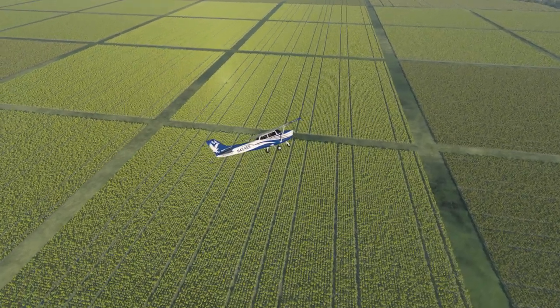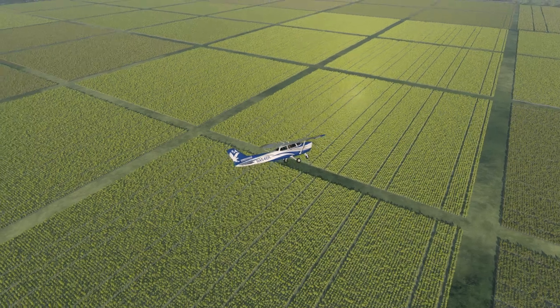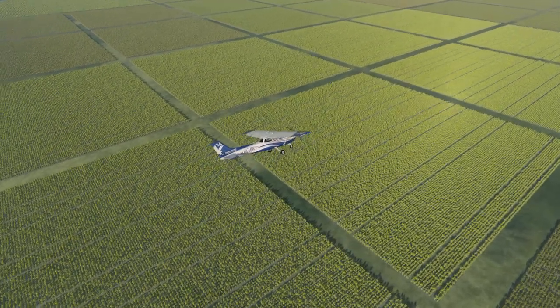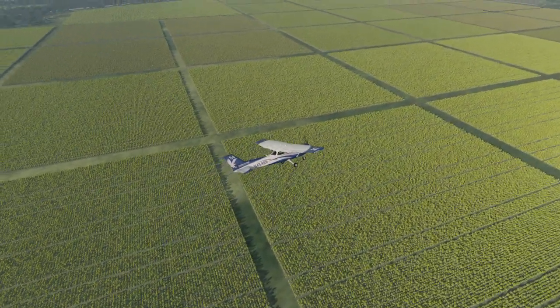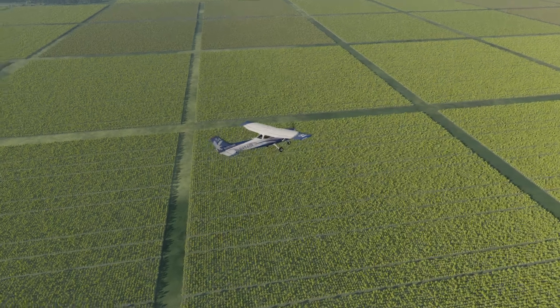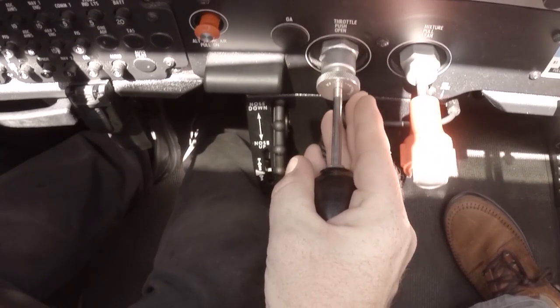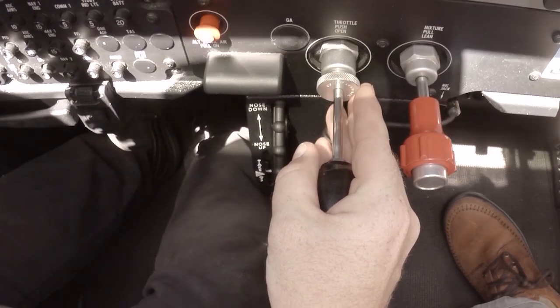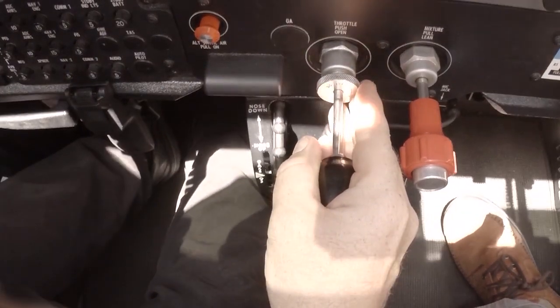As the bank angle changes throughout the turn, the amount of induced drag will also change. This change in drag could potentially cause small changes to the airplane's indicated airspeed. Monitor your power settings throughout the maneuver and make small adjustments as necessary to keep your airspeed constant.